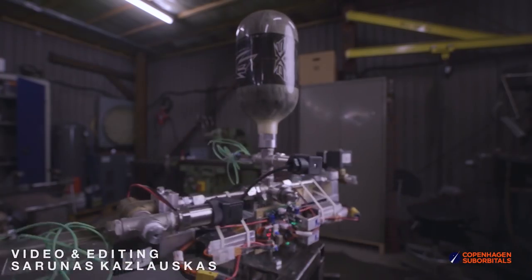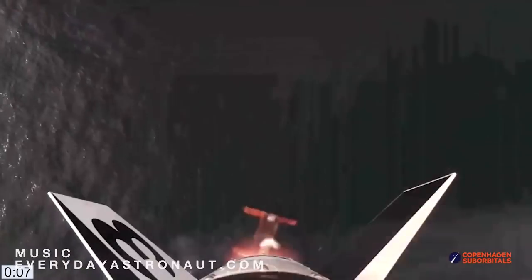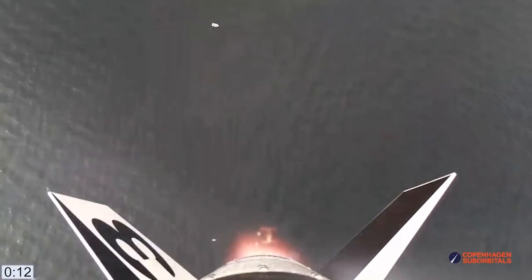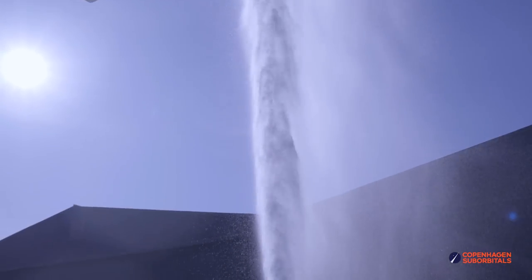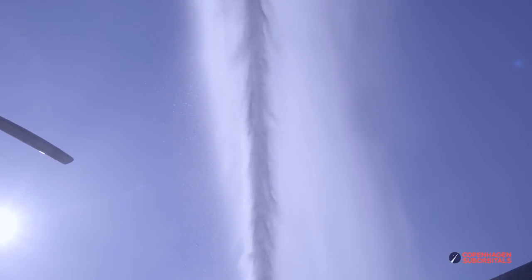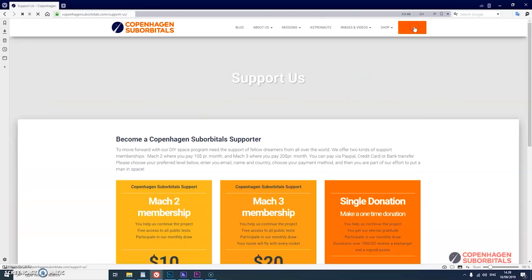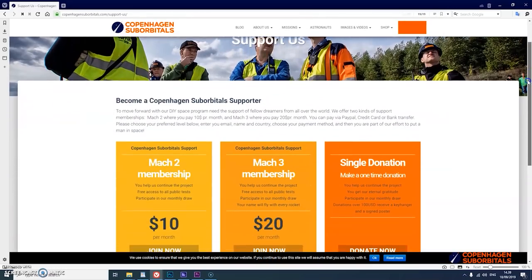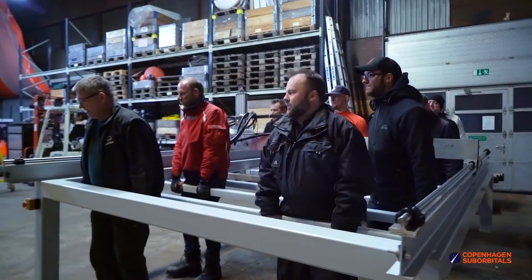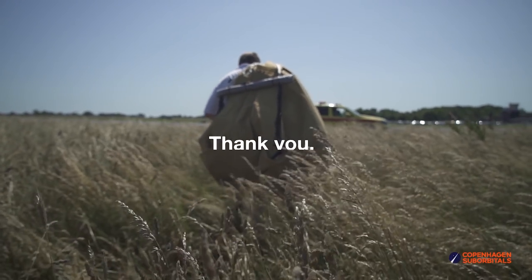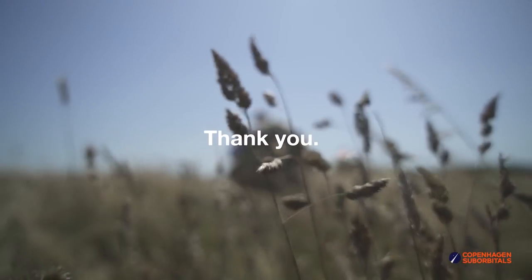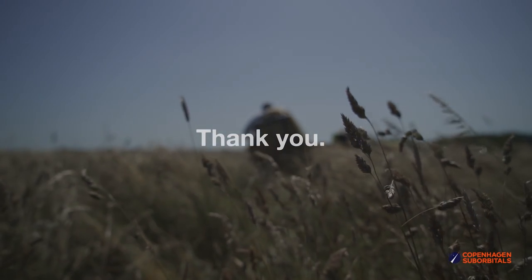Copenhagen Suborbitals is a non-profit, all-volunteer project. The reason we are getting so close to reaching space on our Spica rocket is because of all our crowdfunding supporters. If you've been following this project and feel passionate about new ways of exploring space and building rockets, you can help us out by going over to our website www.compsub.com and becoming a supporter with a small monthly or one-time donation that helps us pay workshop rent and buy materials. So on behalf of everybody at Copenhagen Suborbitals, thank you for your support and we'll see you next time.